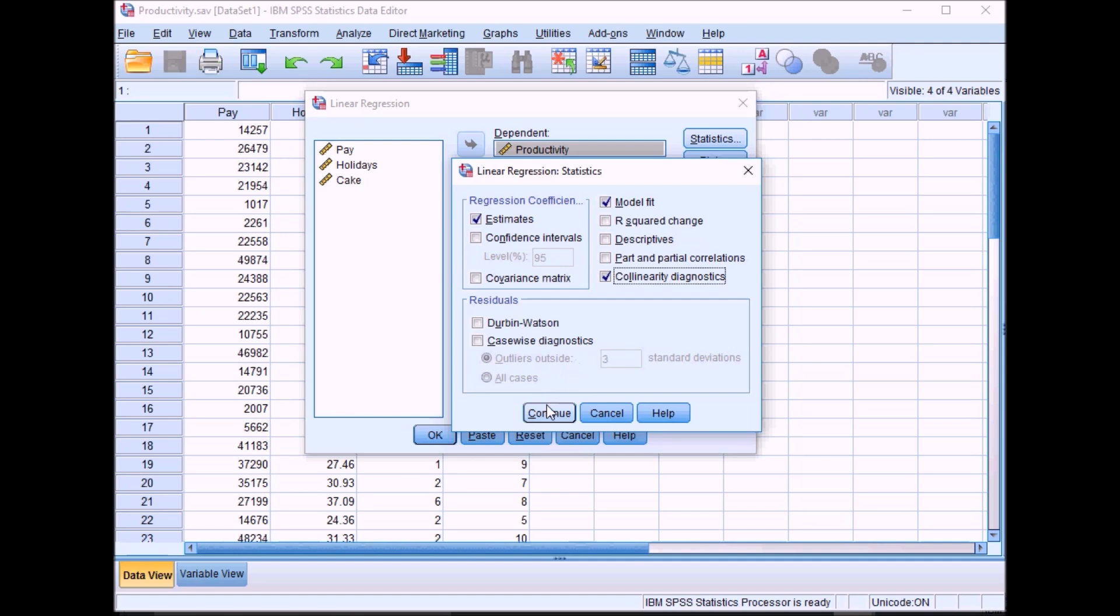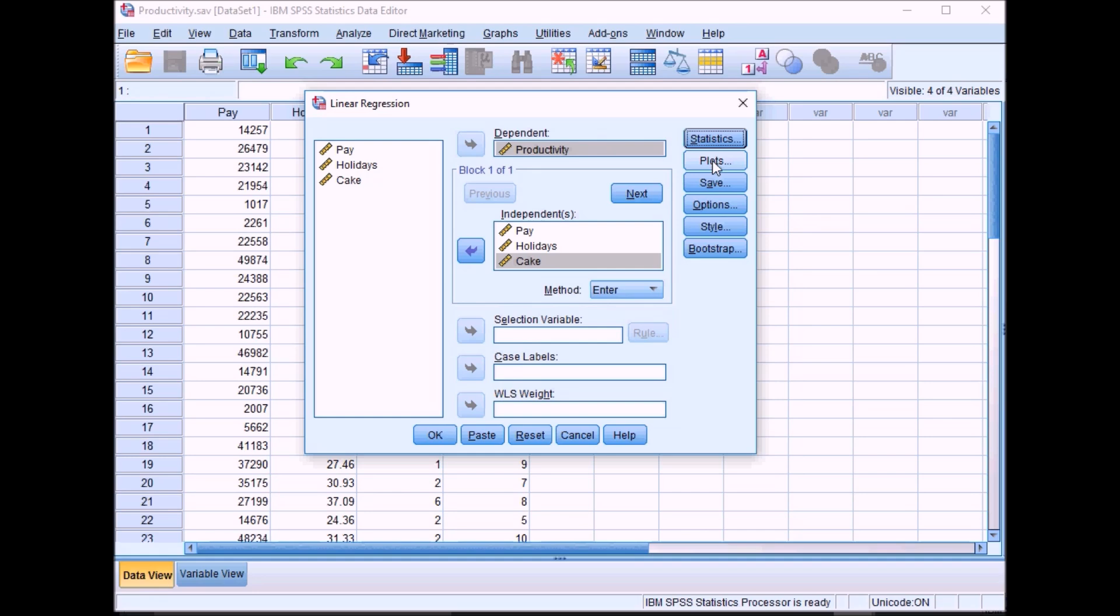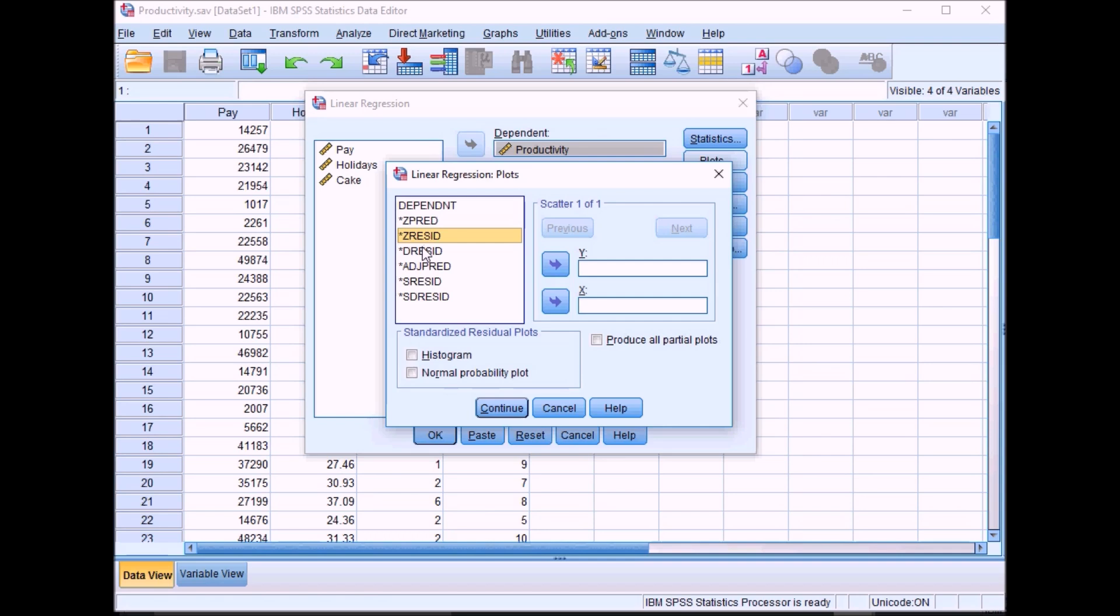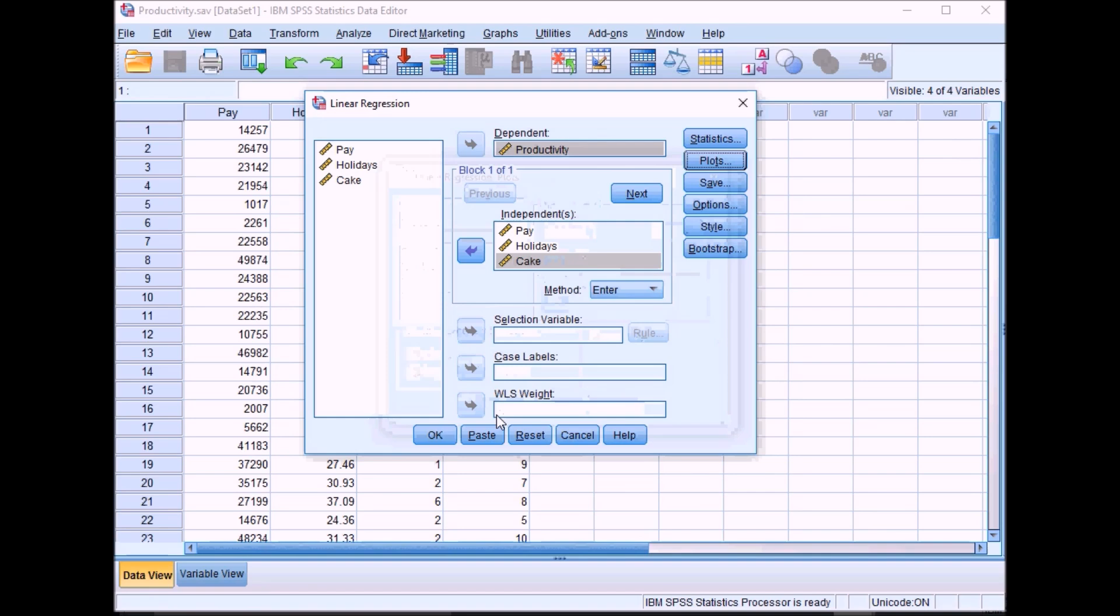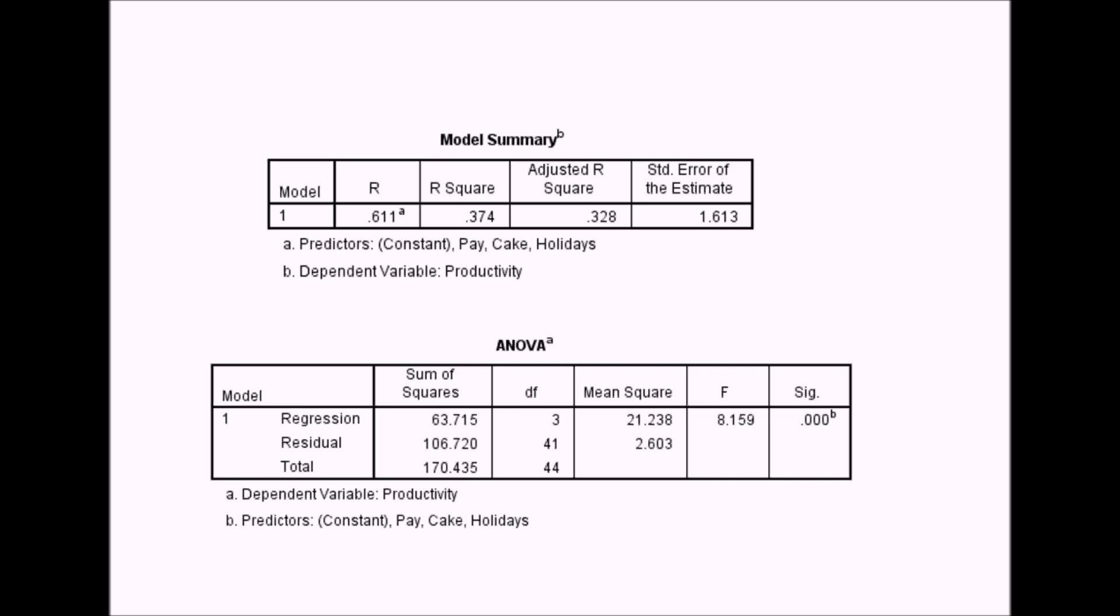You can also select the plots option. If you put Z predicted in the X axis and Z residual in the Y axis, this will give you a plot which plots the predicted values against the residual values. The predicted values would be whatever your model's predicting, and the residual values will be whatever the data looks like in terms of how it deviates from the model. We know that all the values are not going to fit the regression line. The residual value gives you an idea of how far the data points are from the predicted values. You can click on OK then and run that linear regression.